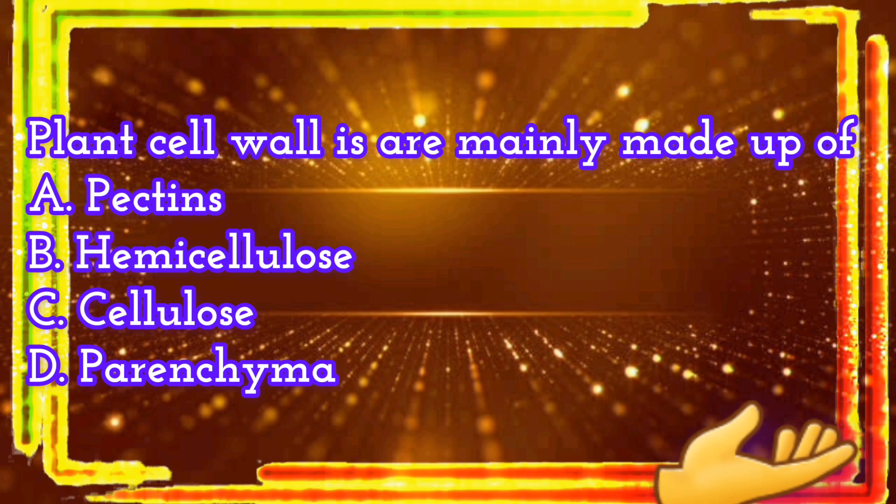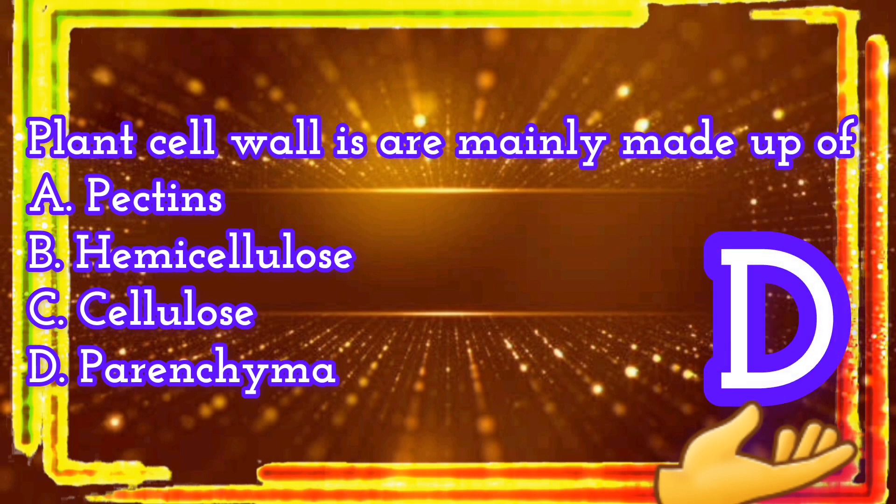Plant cell walls are mainly made up of. A. Pectins. B. Hemicellulose. C. Cellulose. D. Parenchyma. The correct answer is letter D. Parenchyma.